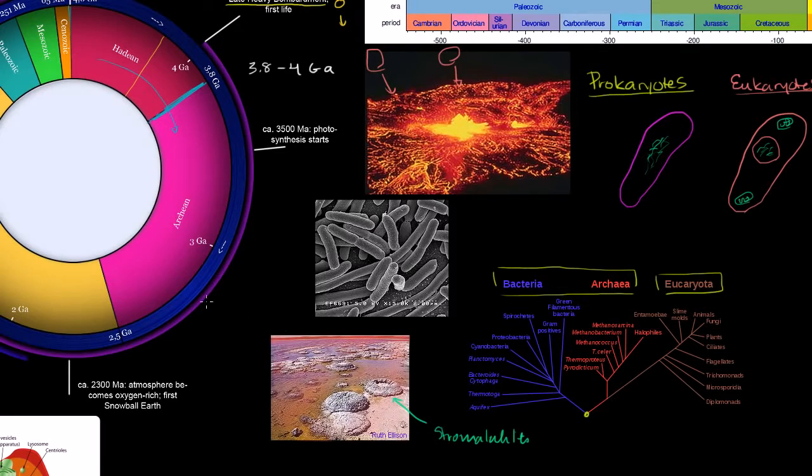But the most significant event in the Archean period, at least in my humble opinion, was what we believe started to happen about 3.5 billion years ago. And this is prokaryotes, or especially bacteria, evolving to actually utilize energy from the sun, to actually do photosynthesis. And the real fascinating byproduct of that, other than the fact that they can now use energy directly from the sun, is that it started to produce oxygen. So it starts to produce oxygen.